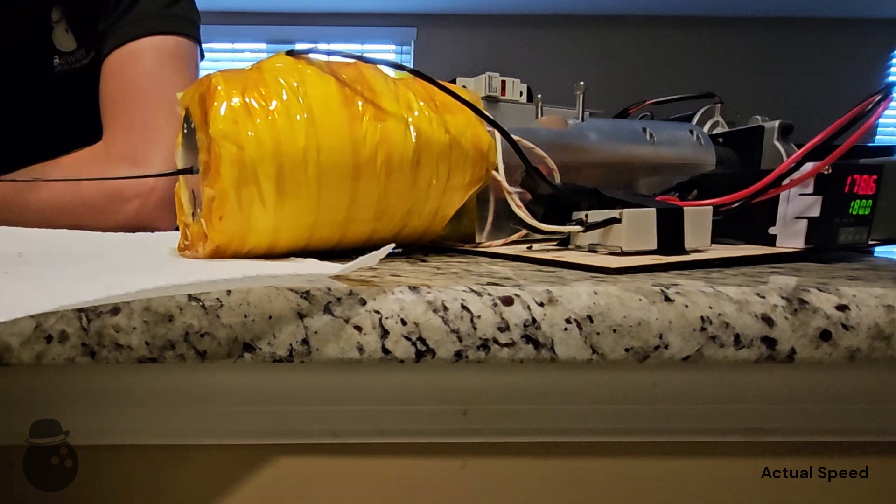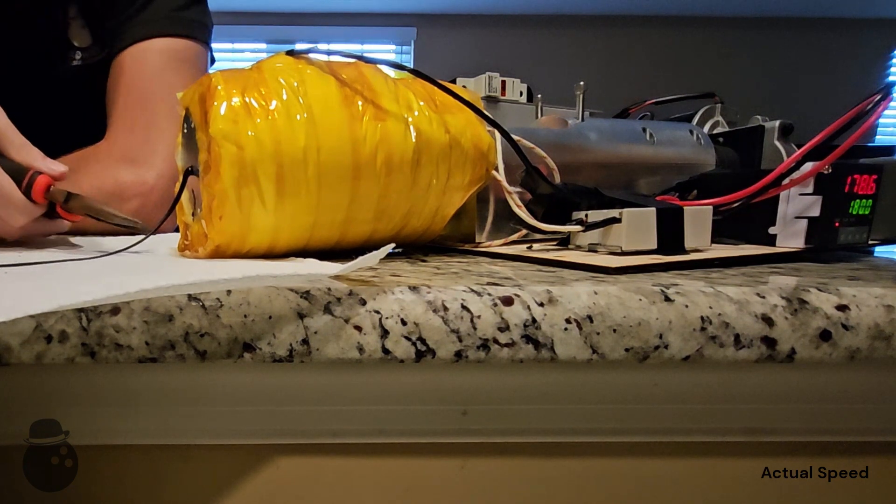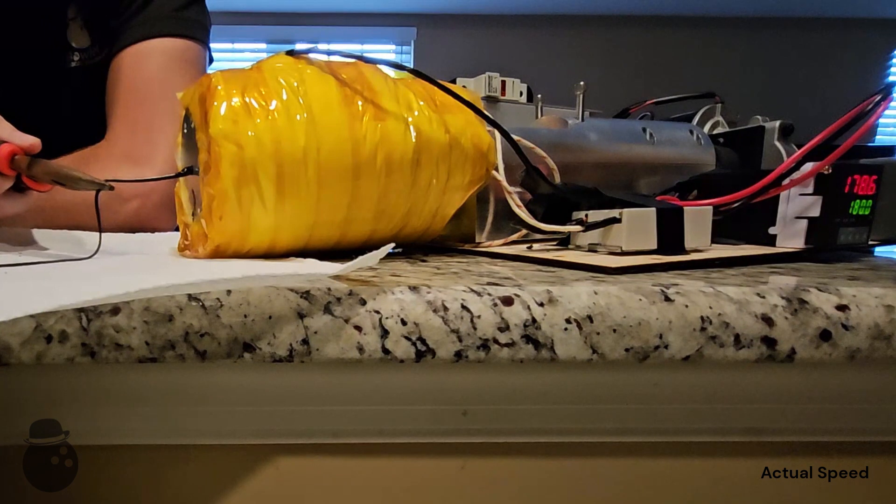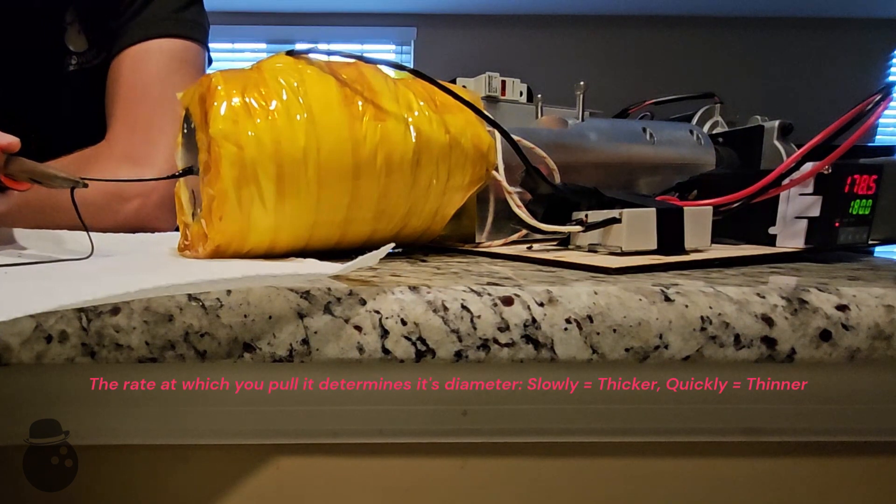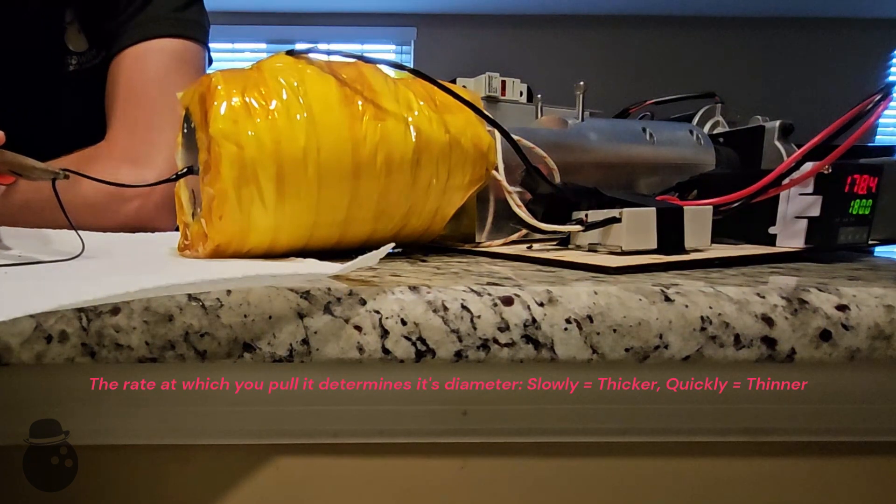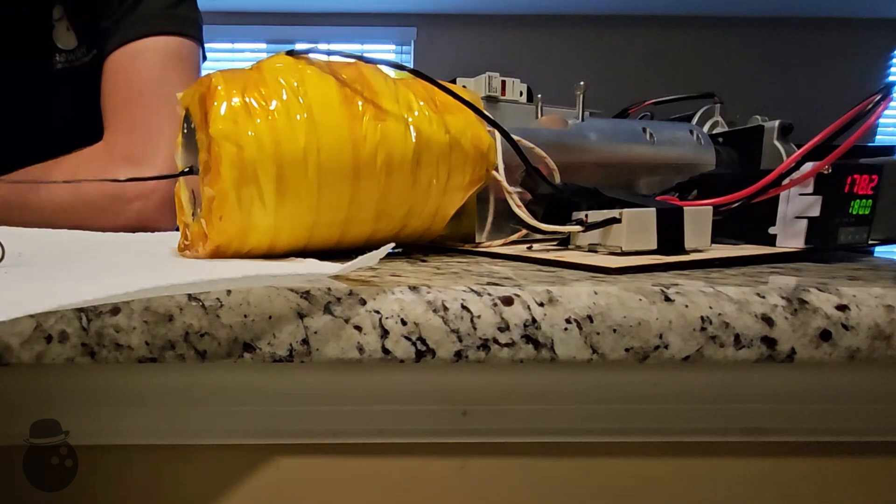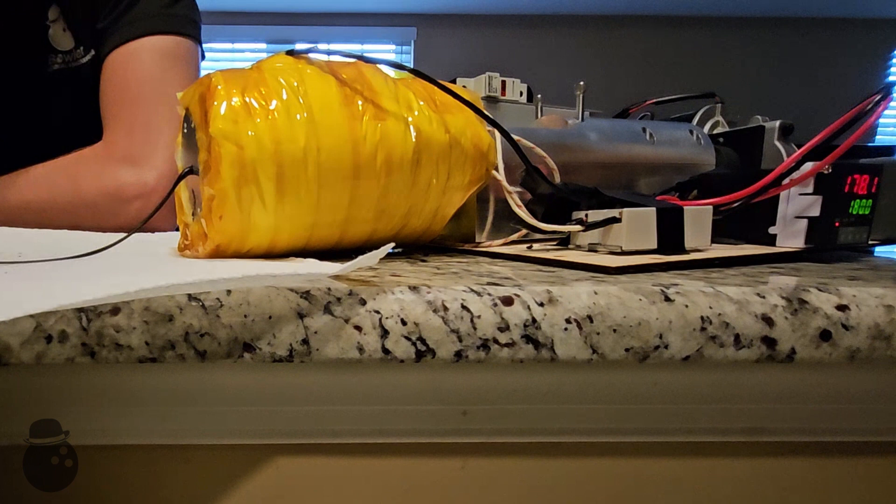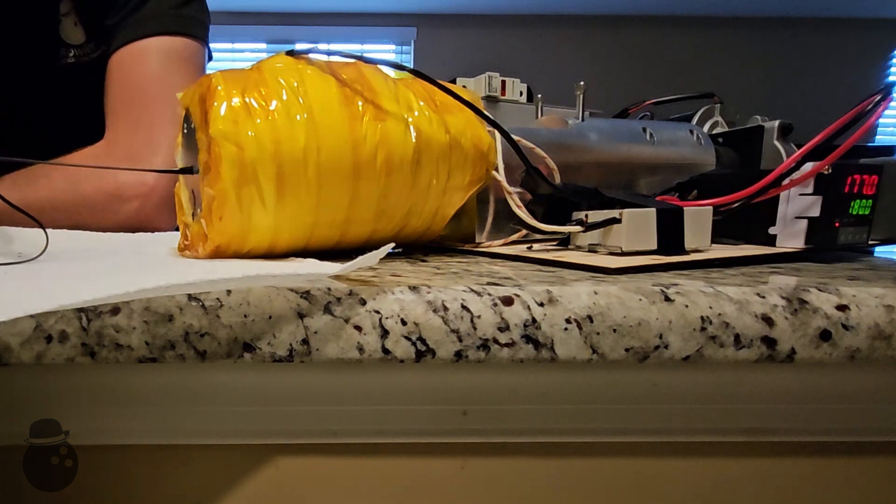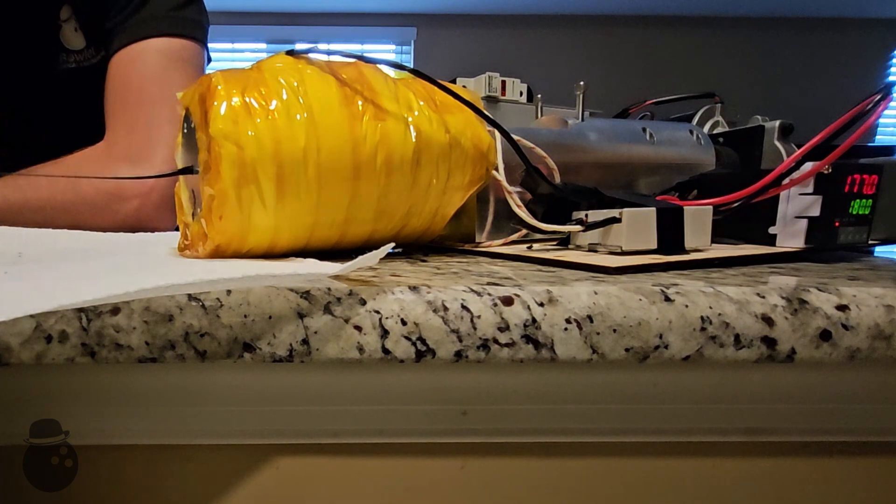The rate at which you pull it changes how thick it is. Going slow gives you thicker. Going quickly gives you thinner. Which will allow me to get a constant diameter in theory. There we go. That's an extruder.